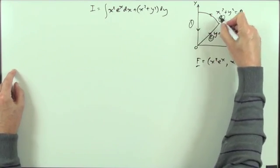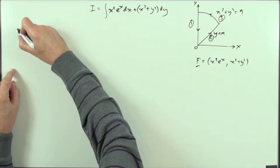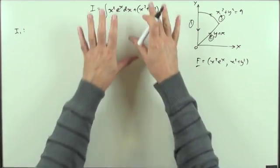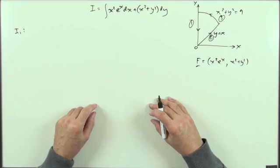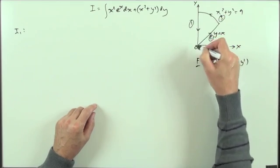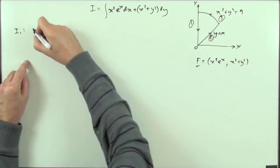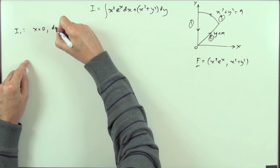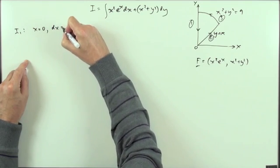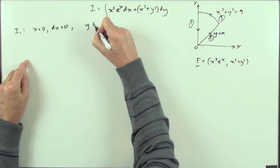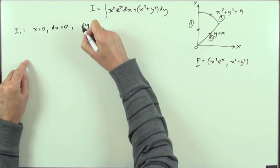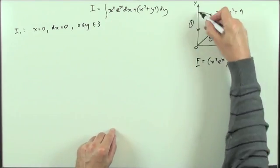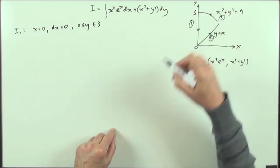So I'll do the line first, then the arc. Working out I1: going down the vertical y-axis, x is zero, dx is also zero, and y goes between zero and three — travelling from three down to zero, because that's a circle of radius three, so the top point is at three.